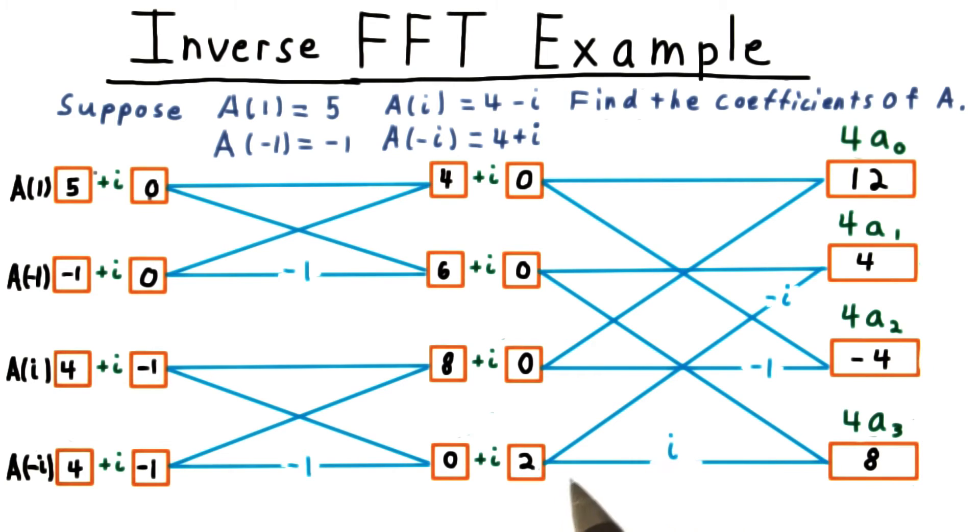And for the last one, we multiply by our omega cubed, which is i. We multiply that by the odd term, and combining that with this gives us a total of 8.